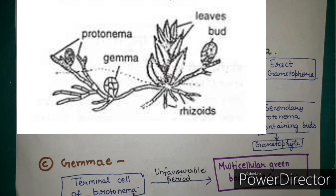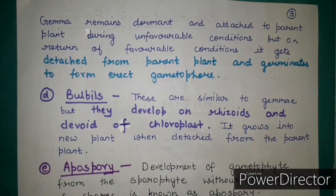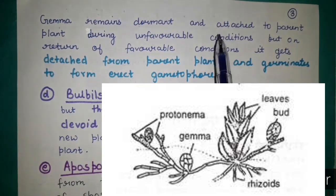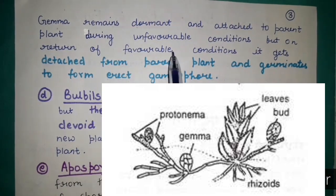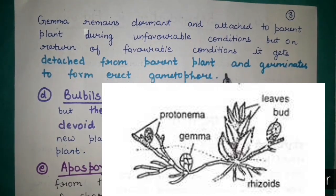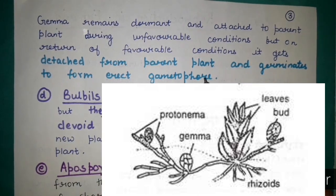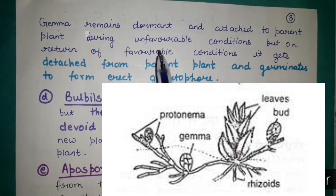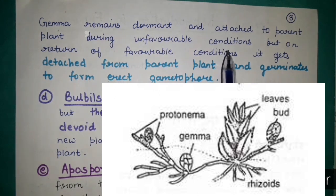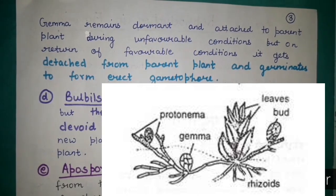The third method is by gemmae. The terminal cells of the protonema, under unfavorable conditions, form multicellular green bodies called gemmae. These gemmae remain dormant and are attached to the parent plant during unfavorable conditions. On return of favorable conditions, the gemmae detach from the parent plant and germinate to form an erect gametophore.